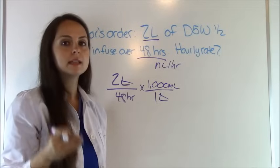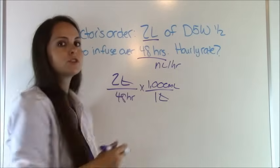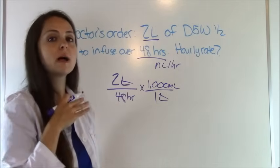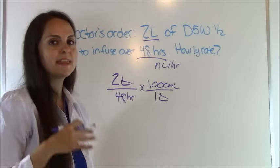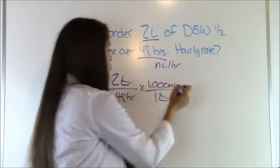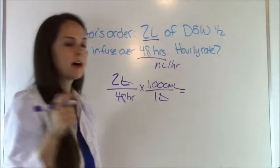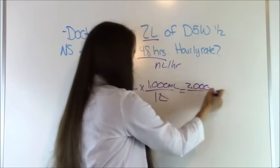We're now in milliliters per hour, so we're ready to solve. We're going to multiply everything in the top and bottom and then divide. So 2 times 1,000 is 2,000 and